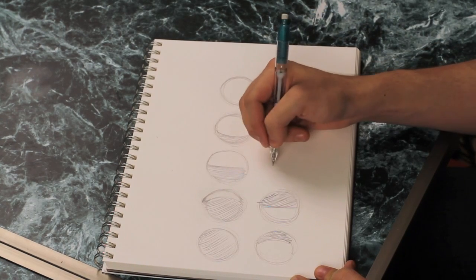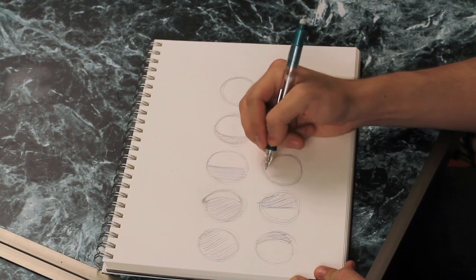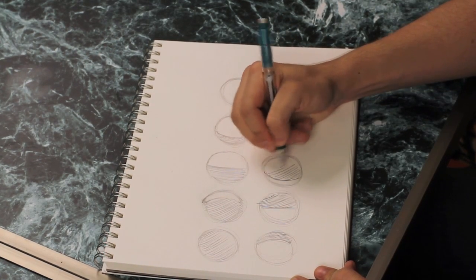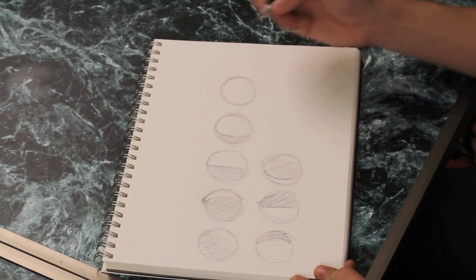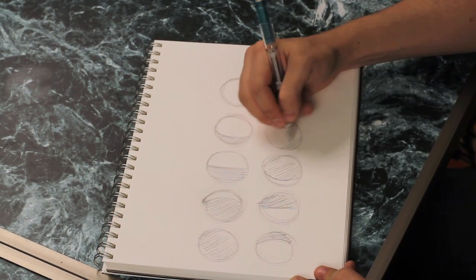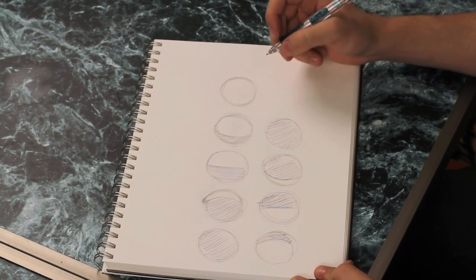From there we have the waning crescent, which is now only a sliver of the moon showing left. And lastly back to the new moon. This is Taylor Libanotti and that's been How to Draw the Phases of the Moon.